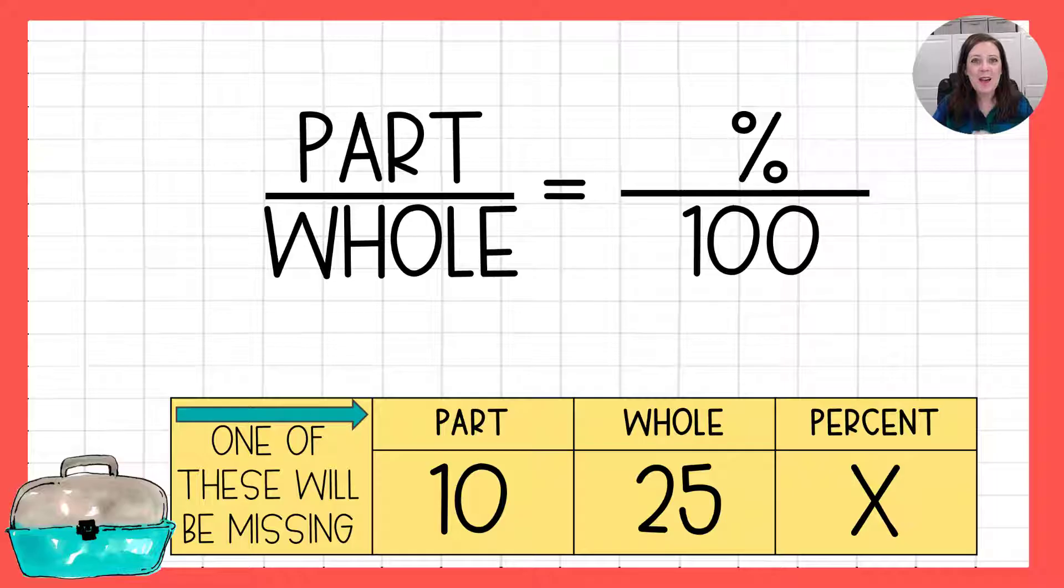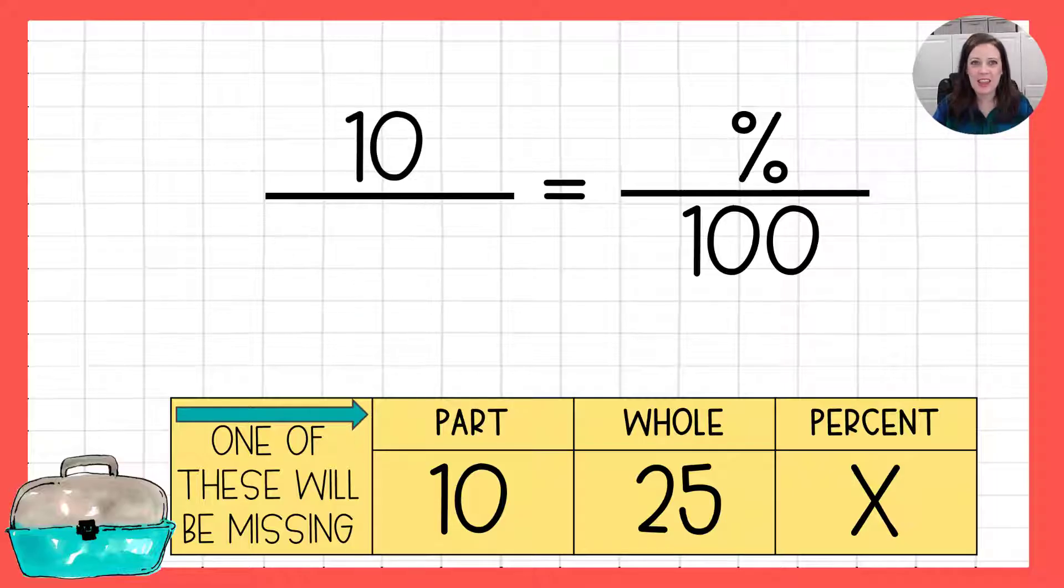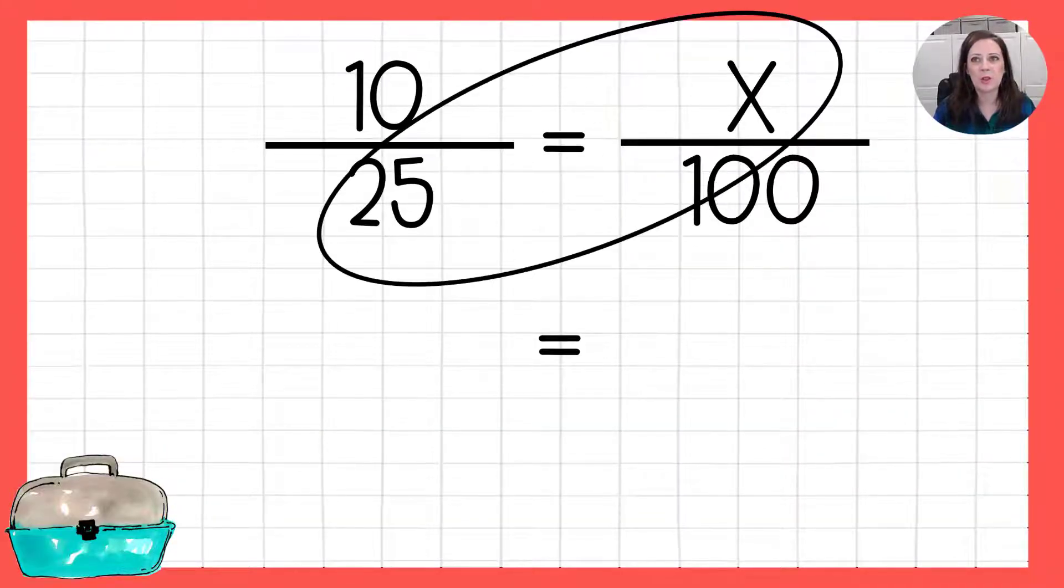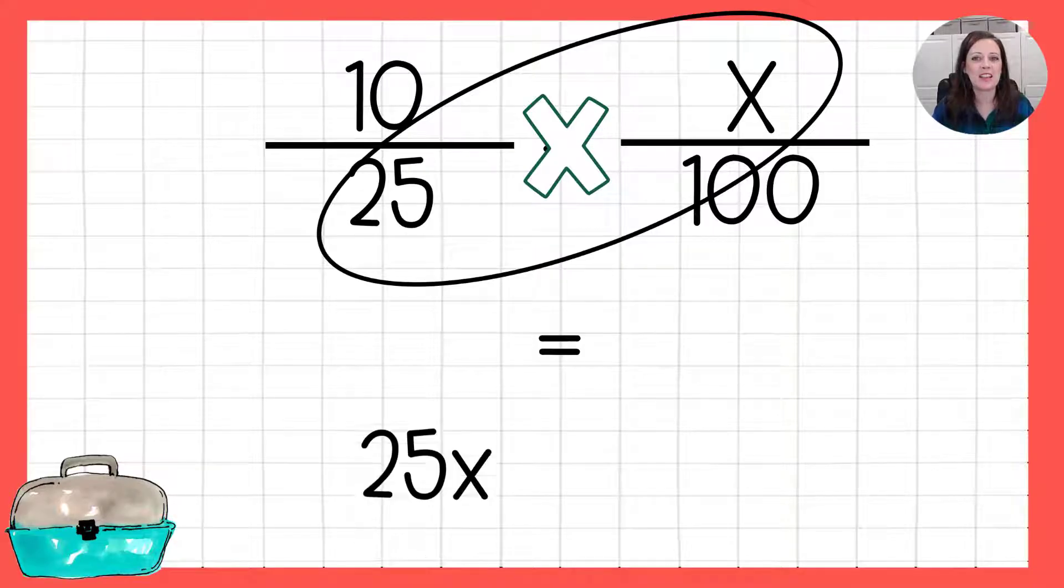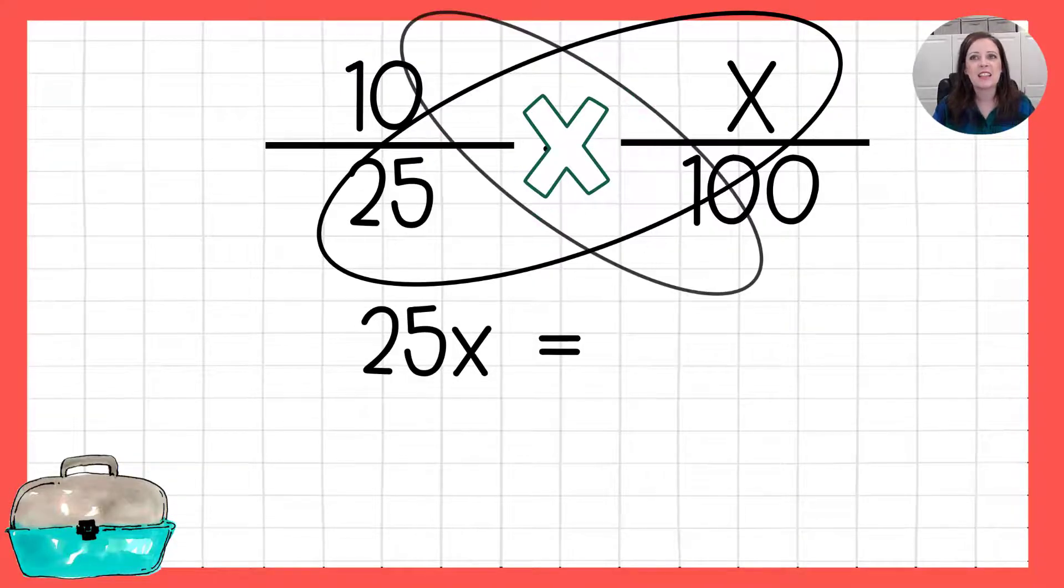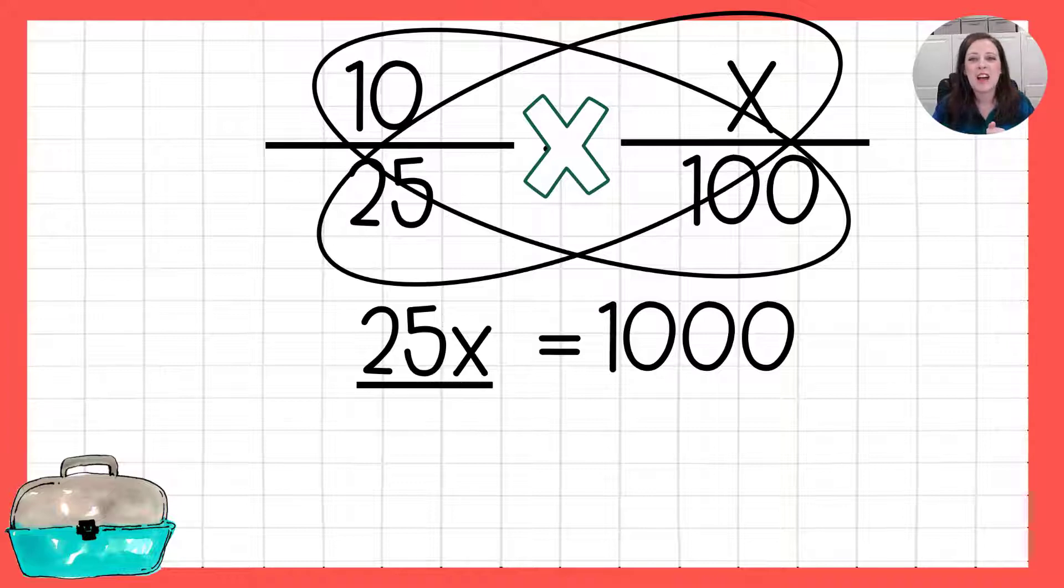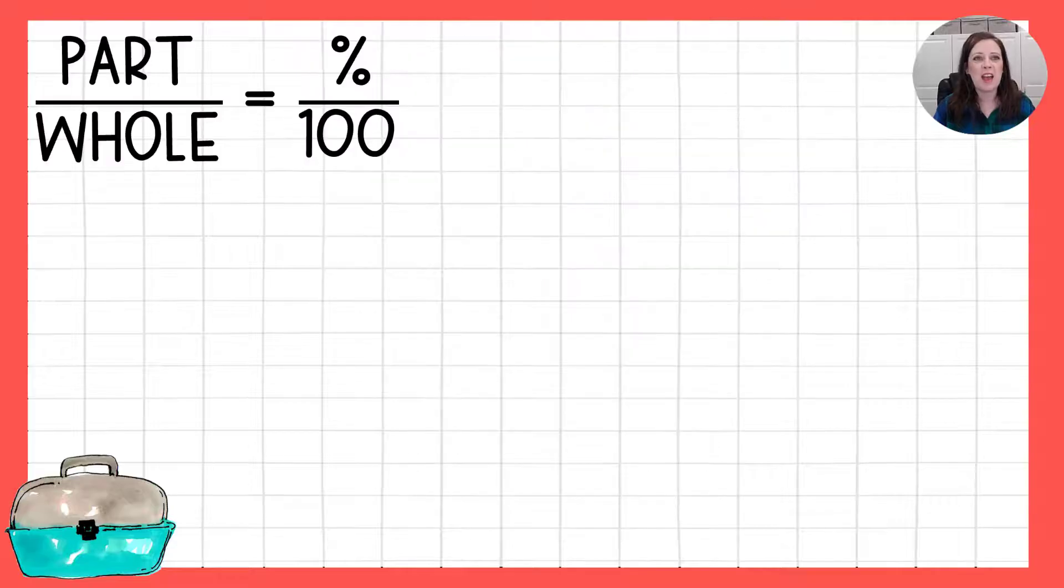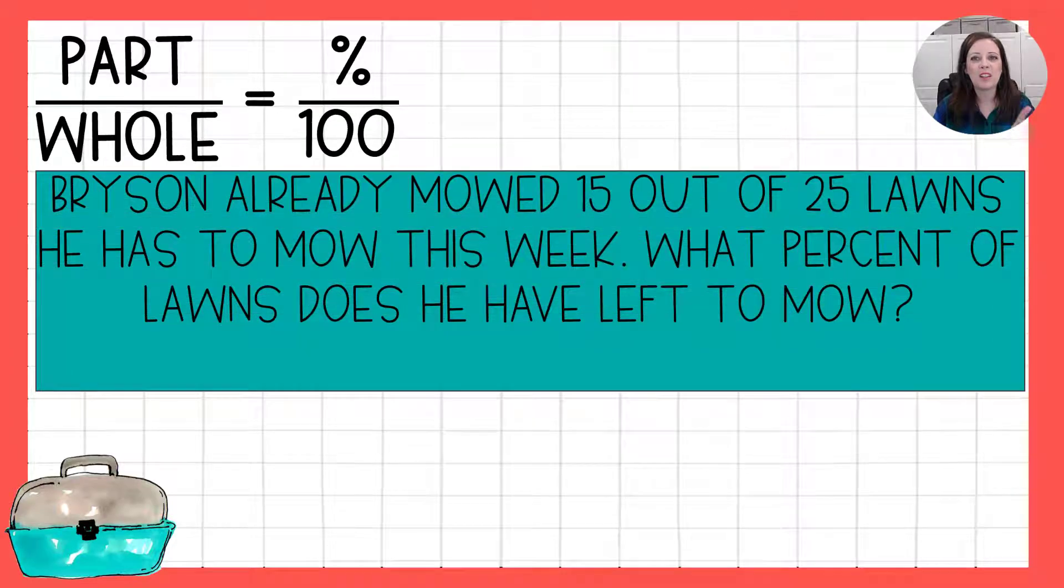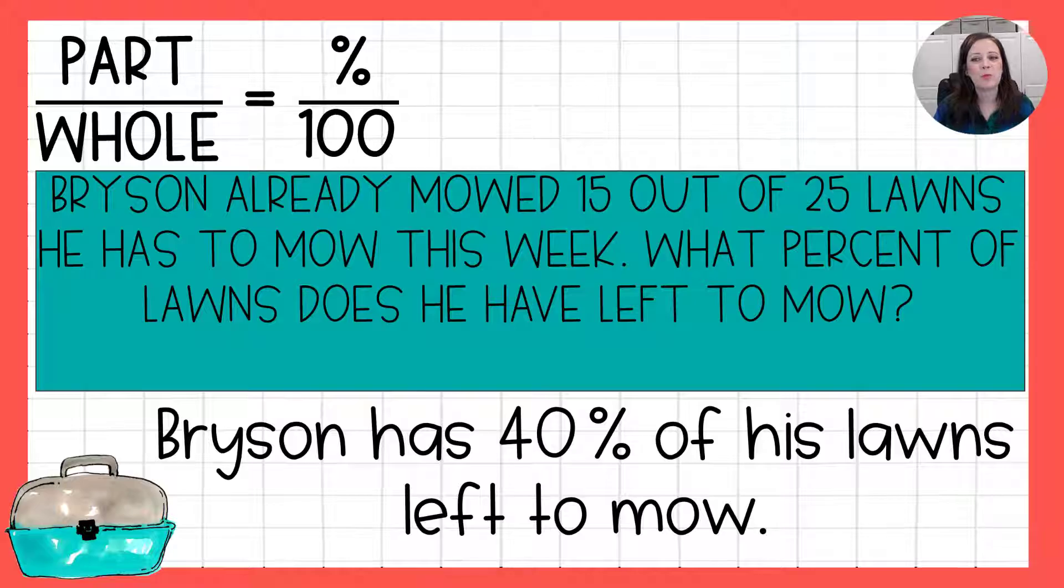Now that we've gotten past that part, we're ready to just plug everything in to where it goes and set up our proportion. And that sets us up to solve this thing with some cross multiplying. So 25 times x is 25x. 10 times 100 is 1,000. Dividing both sides by 25 tells us that x is 40. So taking that back to our problem, what percent of lawns does he have left to mow? Bryson has 40% of his lawns left to mow. So always read those questions carefully so you don't miss what it is asking you.